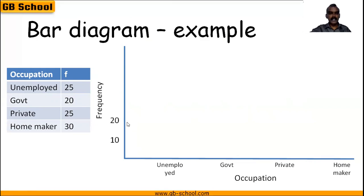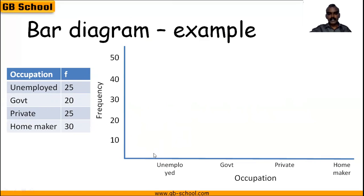We'll go with intervals of 10 on the y-axis: 10, 20, 30, 40, and 50. Next we have to erect the bar rectangles to the corresponding frequencies. As we learned, the height of each bar should correspond to its frequency.